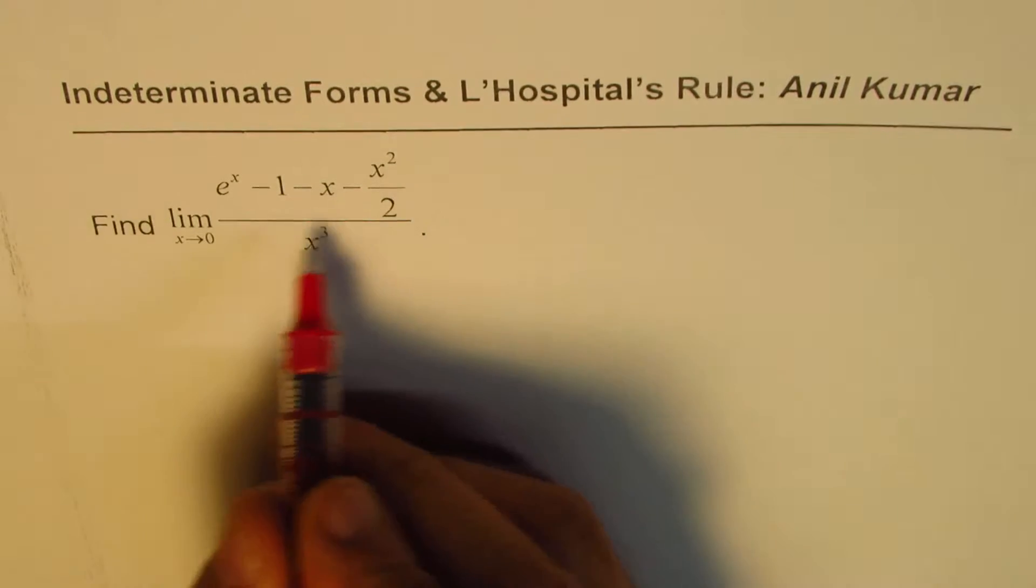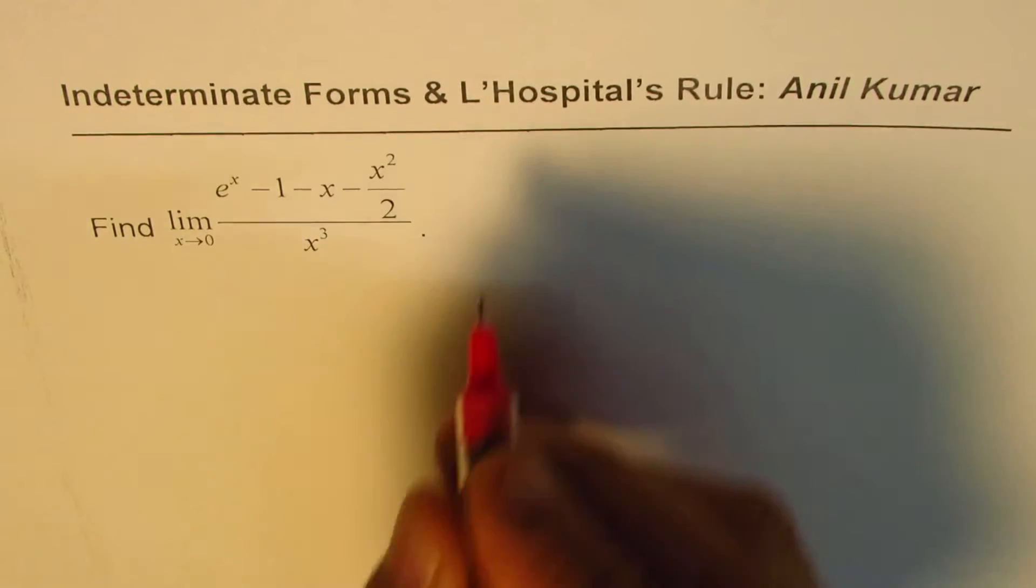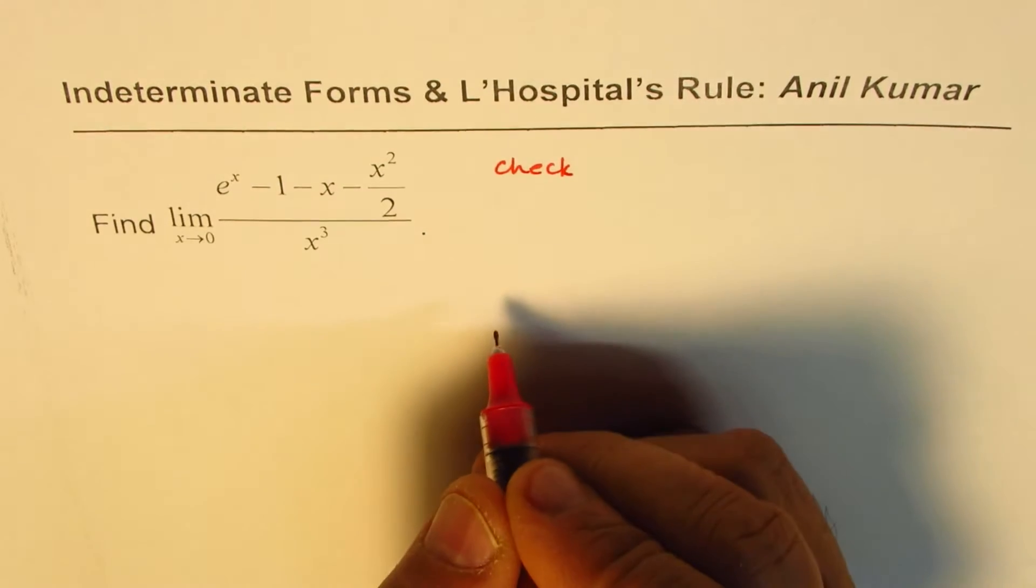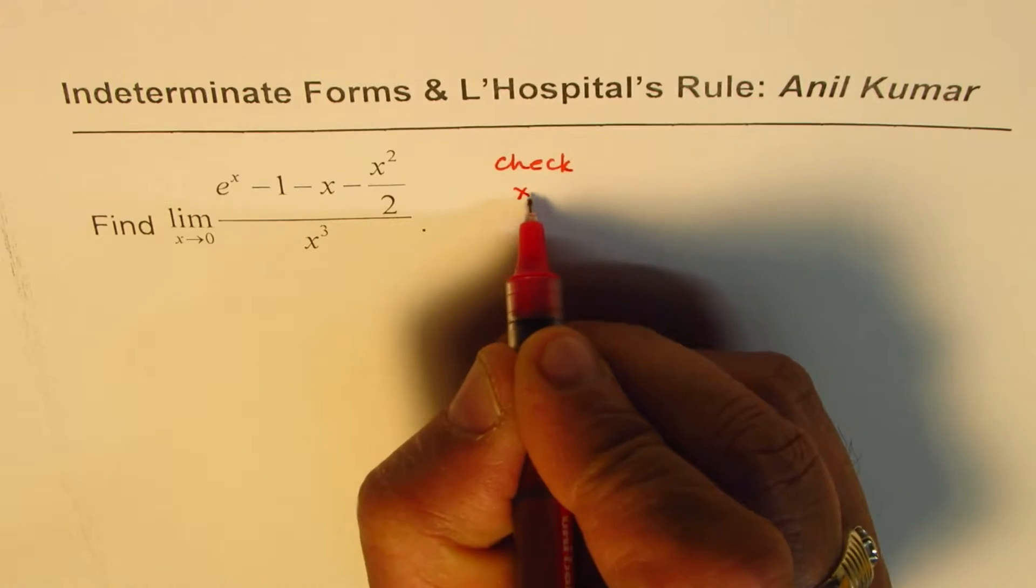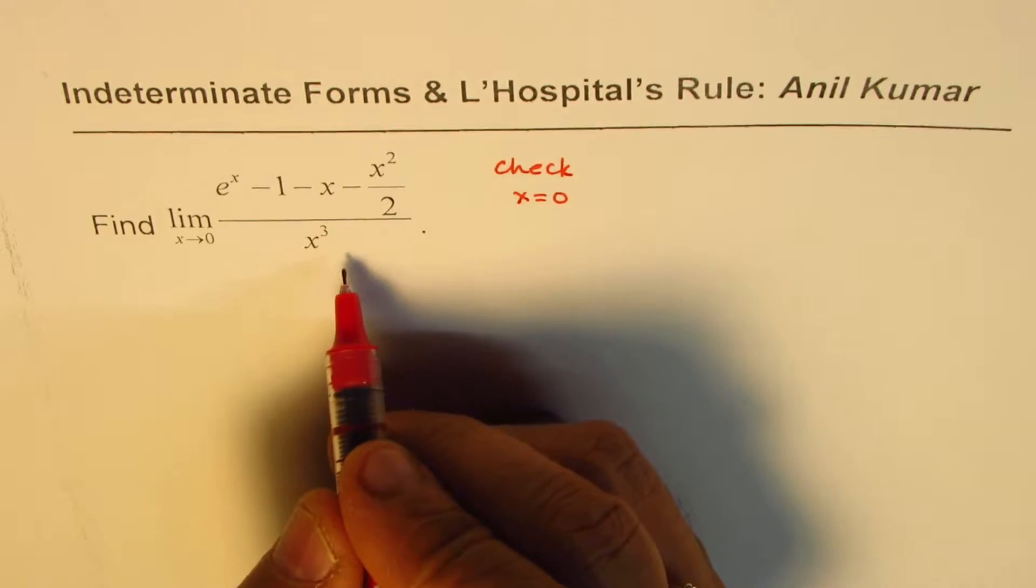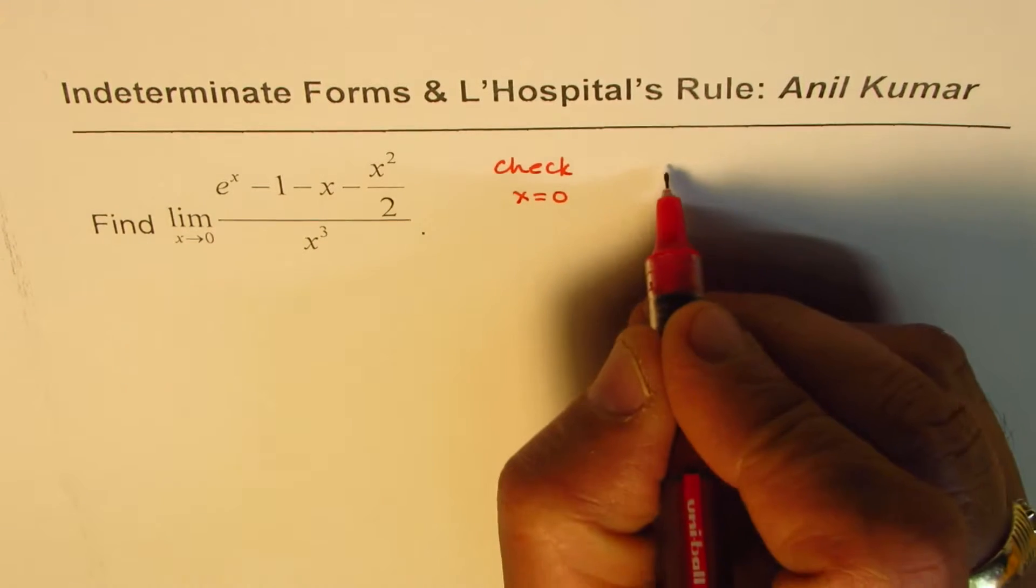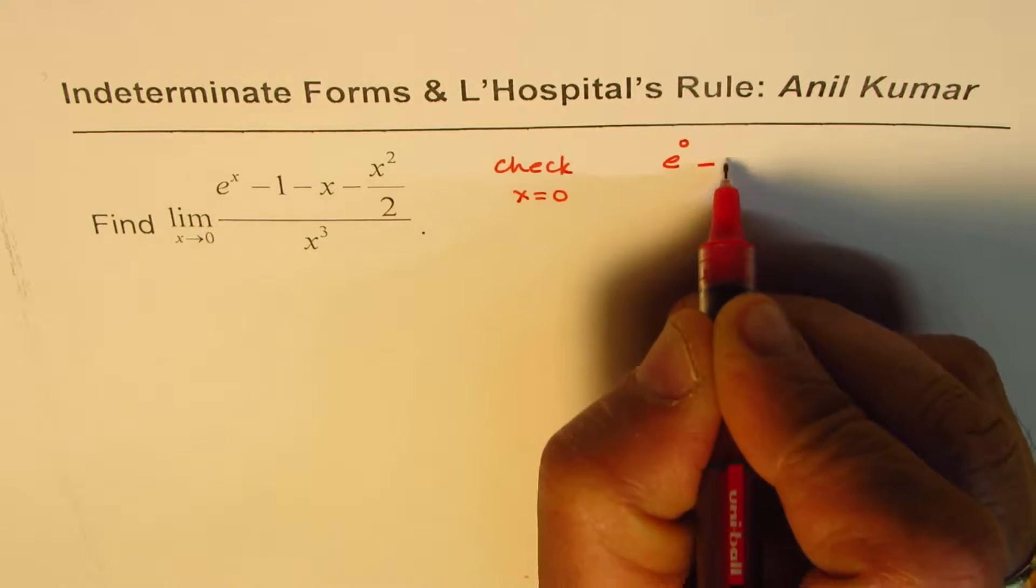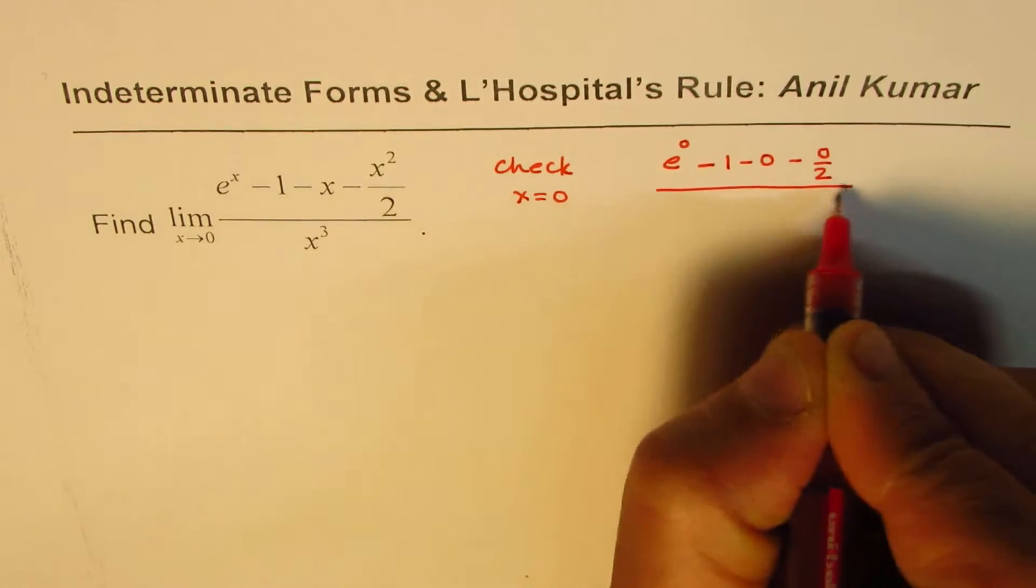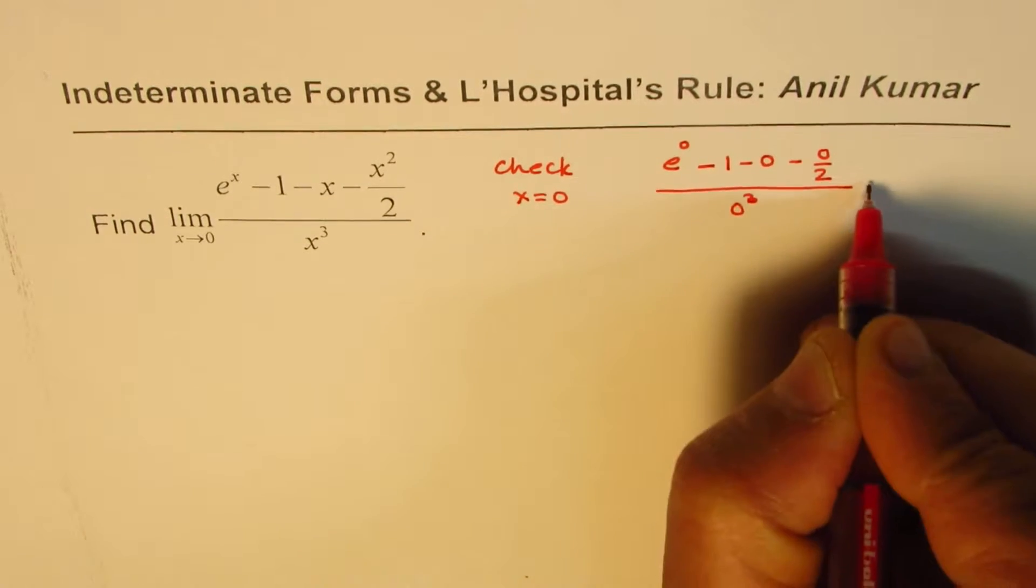Now before the application of the rule, what should we do? We should check whether we really have the required indeterminate form or not. To check, I will substitute x equals to 0 in the given quotient of functions. So when I write x equals to 0, I get e to the power of 0 minus 1 minus 0 minus 0 over 2 divided by 0 cube.